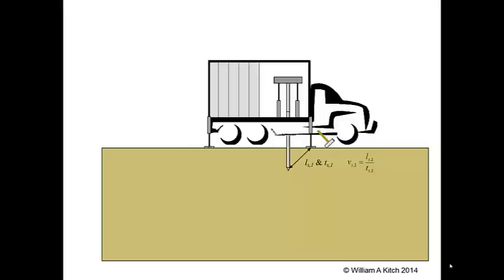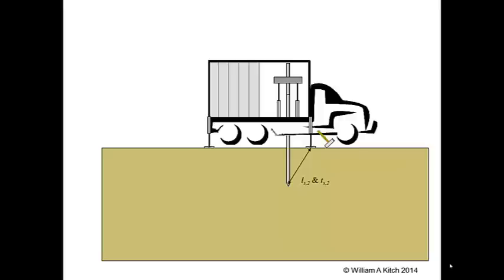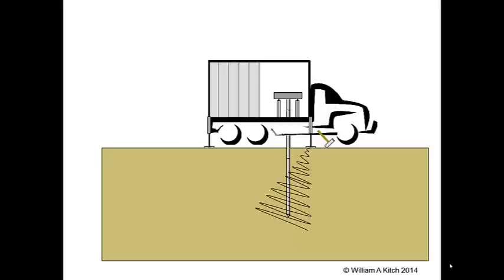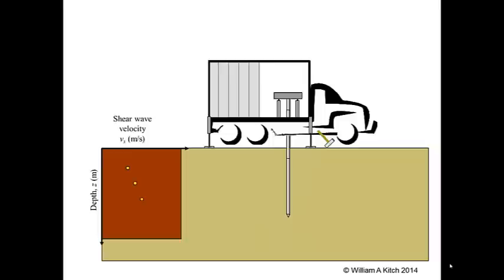After completing the shear wave measurement, which only takes a few moments, the cone is advanced again collecting tip resistance and side friction data. We stop the cone at a deeper depth, generate another shear wave, and repeat the measurements, this time determining L_S2 and T_S2. We can then compute the average shear wave velocity for the soil between the first and second measurement points, V_S2, as the difference in the two travel distances divided by the difference in arrival times. The process is repeated by stopping the cone at successive depths and generating shear waves until the CPT sounding is completed, allowing us to develop a plot of shear wave velocity as a function of depth.